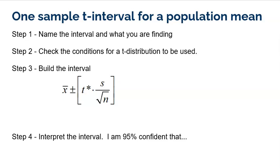Now first let's quickly review the steps for a one sample t-interval for a population mean. Of course we have to name the interval and describe in context what it is we're trying to find. We've got to check those conditions necessary for a t-distribution to be used. Then the step to actually build the interval is right here, but this is the step we're going to use our calculator for. And then of course we have to interpret the interval in context.